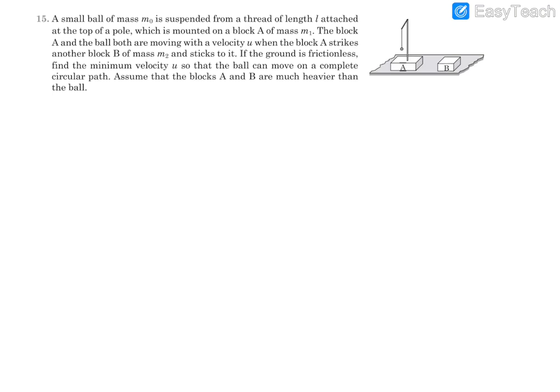Hello students, let's consider this equation number 15. It reads that there is a small ball of mass m₀ which is suspended from a thread of length L which is attached to the top of a pole, and this is mounted on a block A of mass m₁. So this is block A and its mass is m₁, and there is a ball. This is length L thread, and this ball is of mass m₀, so we are using this figure.